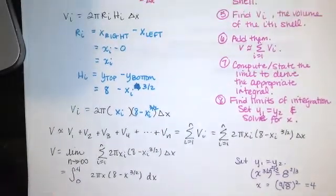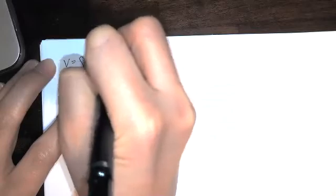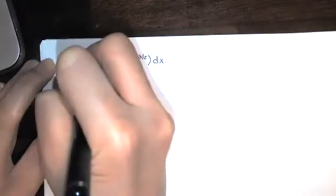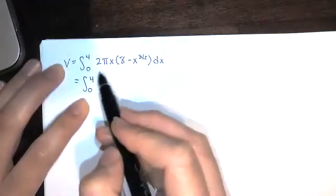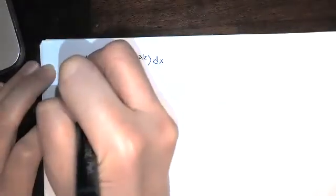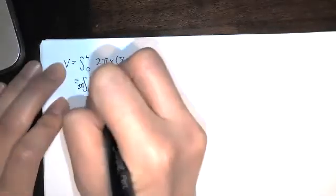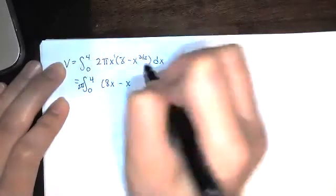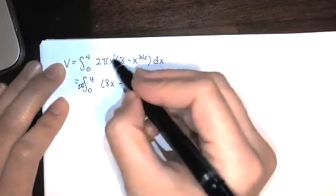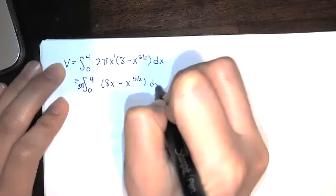Okay, so we're here. Now we just need to evaluate this integral. If you want, you can factor out the 2 pi or you can distribute the 2 pi. And I think I will factor it out. So I've got my 2 pi out there and I'll distribute that x through here. So 8 times x minus x to the 3 halves times x to the first. Remember we add the exponents. 1 plus 3 halves is 5 halves. If you're not sure, you can think of that as 2 halves. 2 halves plus 3 halves is 5 halves. And then we integrate.